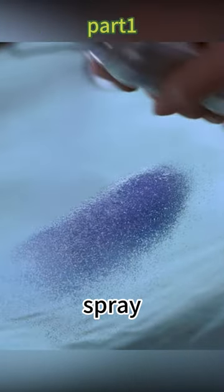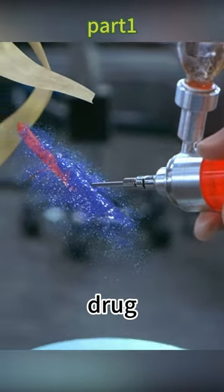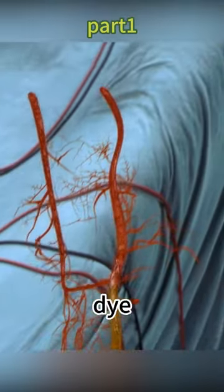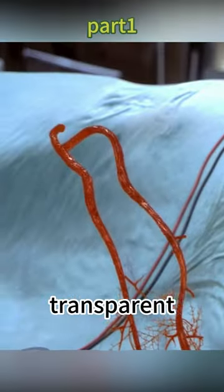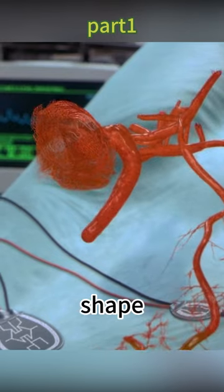They spray it with blue spray, slowly tapping it to reveal the blood vessels. The lab technician injects a red drug into the Aranitan's body. The red dye begins to flow through the transparent veins and converges in the shape of a heart.